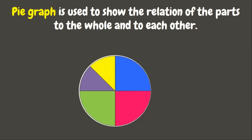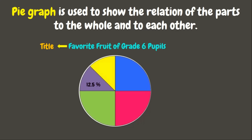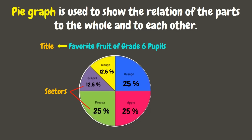The title must be written to determine what the graph is all about. In a pie graph, the circle is divided into parts according to the percentage of each item. The percent which shows what part of the whole is being represented is called a sector, while the names of the items or categories are the labels.